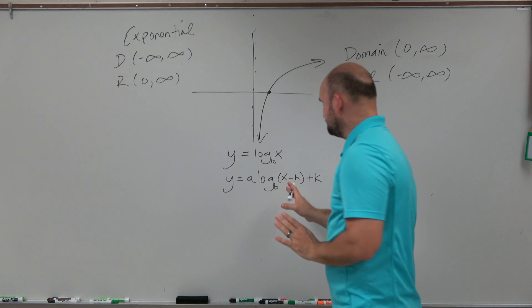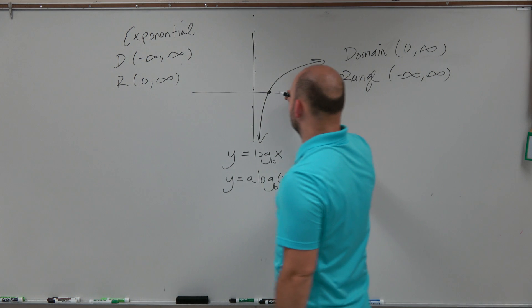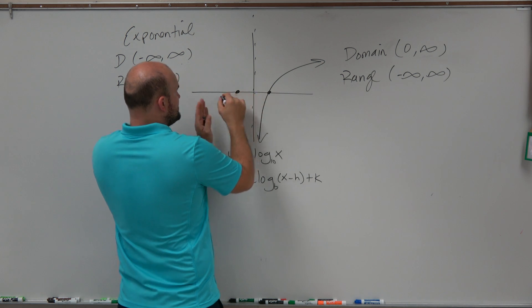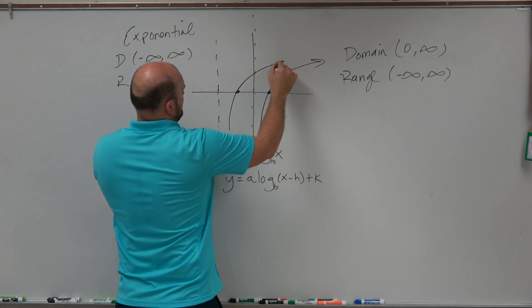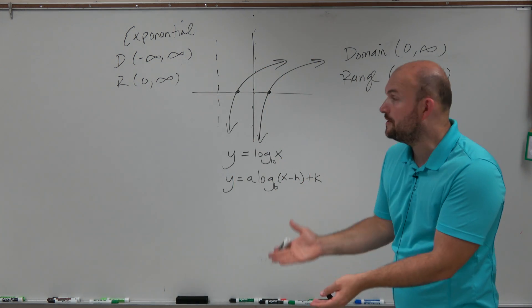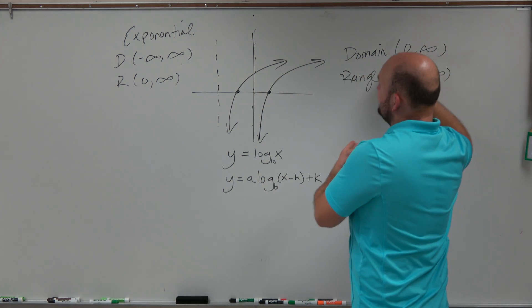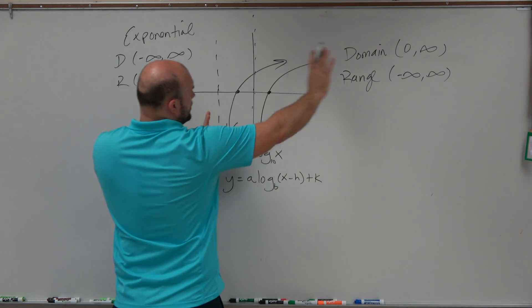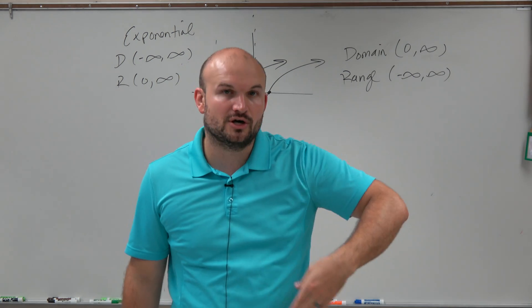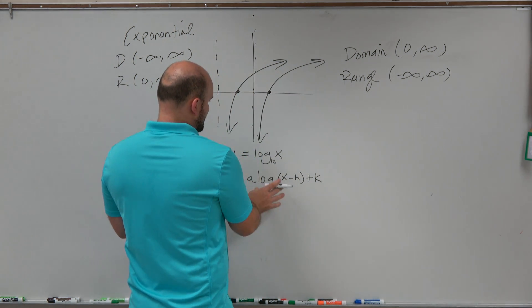So if we have this h, remember h shifts the graph over, let's say it shifts the graph over two units. So 1, 2. Well, this asymptote is also going to move over two units. So if I shift the graph over two units, which would be like x plus 2, now you can see that the range is not affected, right? That's still going down to negative infinity to infinity. But now the domain is from negative 2 to infinity. So whatever the value of h is, is basically going to be your side point of your domain.